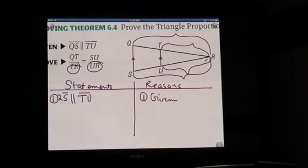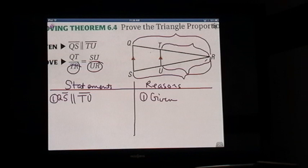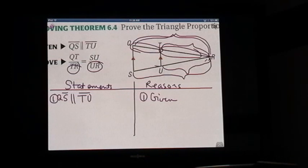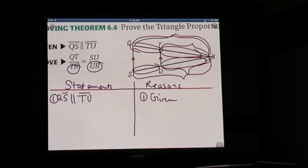We're going to say that the sides are proportional to each other. Let's set up our proportion so that TR is on the bottom: QR is to TR as SR is to UR. Then we're going to use the segment addition postulate to remind ourselves that QR is made up of QT and TR.